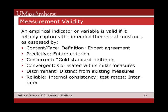Measurement validity has essentially two parts. Reliability means internal consistency — that we're consistently getting the thing we want to measure. The second idea concerns the intended theoretical construct. We can think about content and face validity, which requires careful definition and expert agreement. We can think about predictive validity: if the measure is measuring what we think, it should predict something in the future. There's also concurrent validity, convergent validity, and discriminant validity — meaning the measure is distinct from related concepts and existing measures.